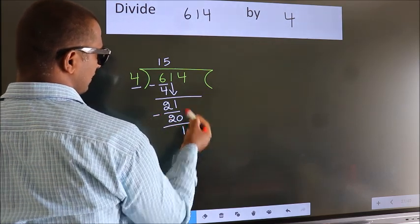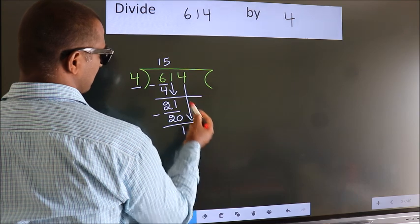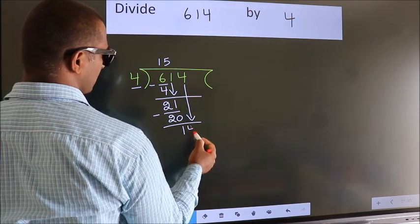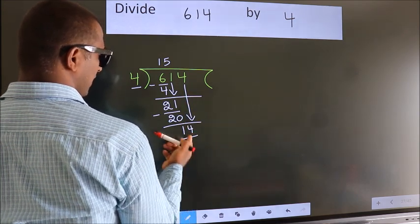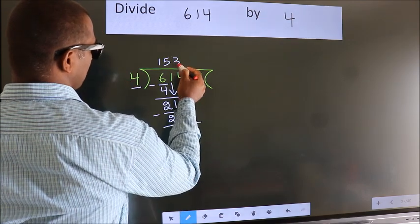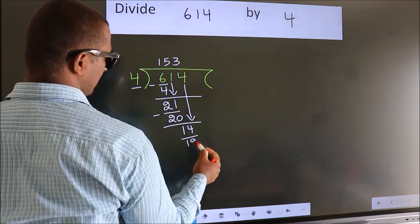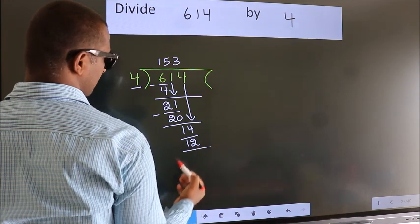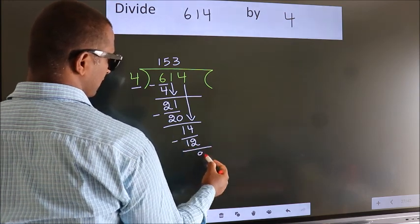After this, bring down the beside number. So 4 down. So 14. A number close to 14 in 4 table is 4 threes, 12. Now we subtract. We get 2.